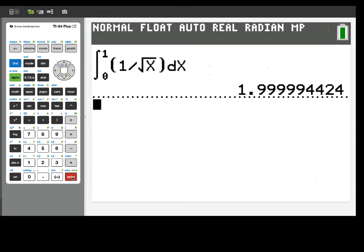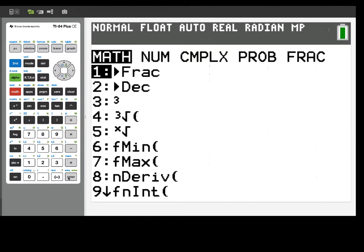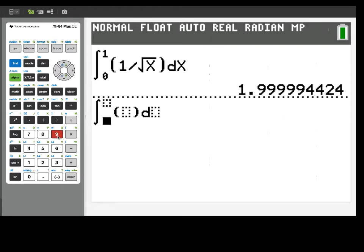And amazingly, we actually get a value very close to the limit of this improper integral, which is actually 2. The reason for this is the numerical integration capability is not actually sampling at x equals 0, and so we actually get a pretty good approximation, as long as the improper integral converges.